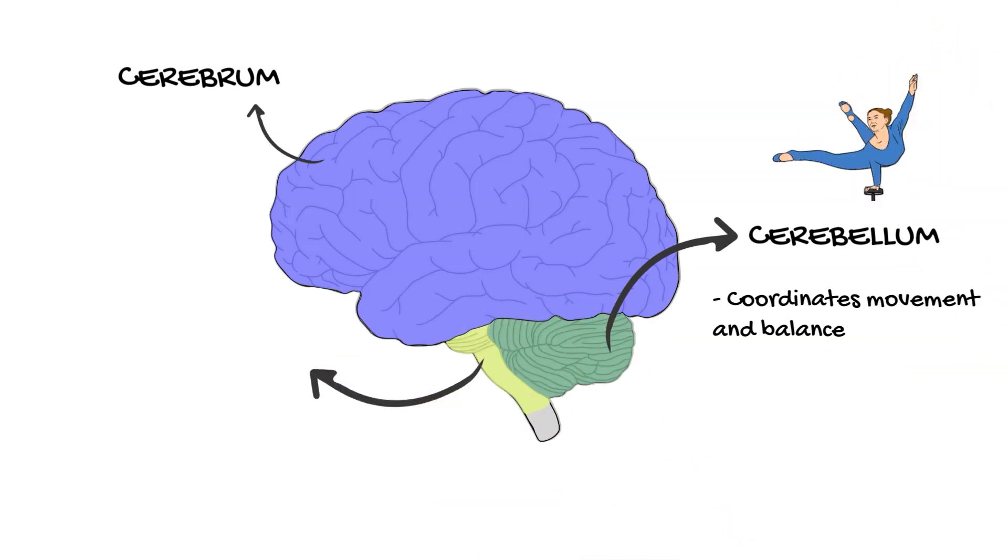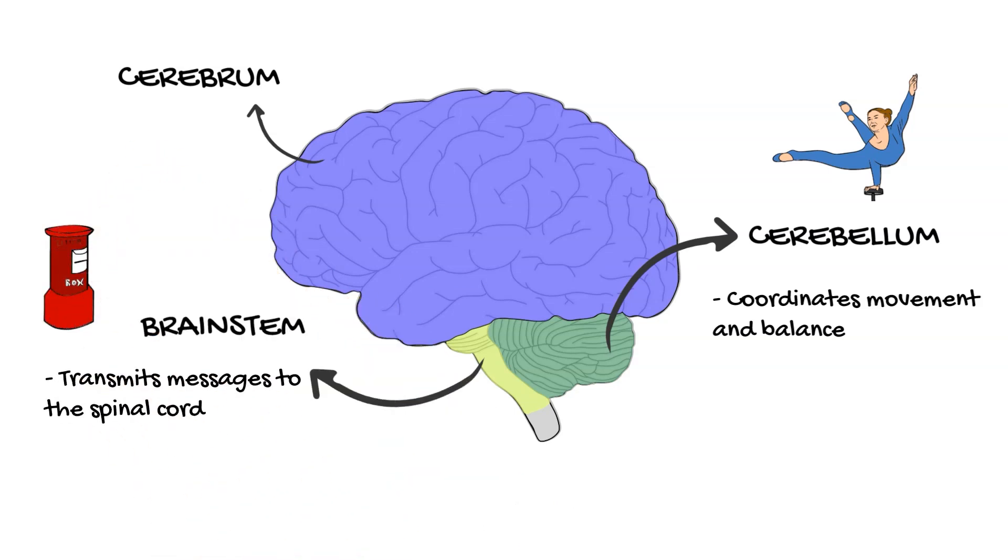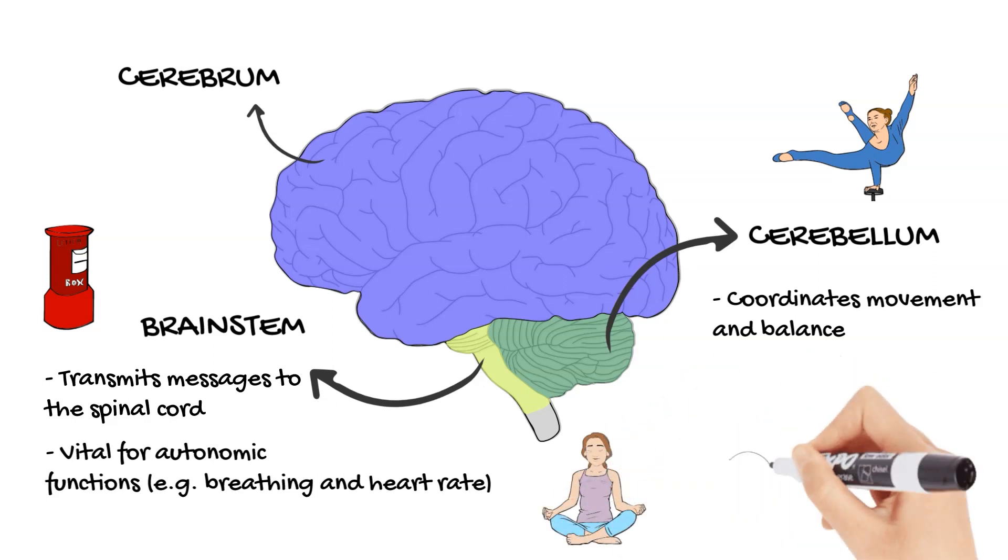At the brain's foundation, the brainstem acts as the main thoroughfare for information traveling between the brain and the body via the spinal cord. Beyond its role in passing messages, it's vital for autonomic functions, breathing, heart rate, and the delicate balance of consciousness and sleep.